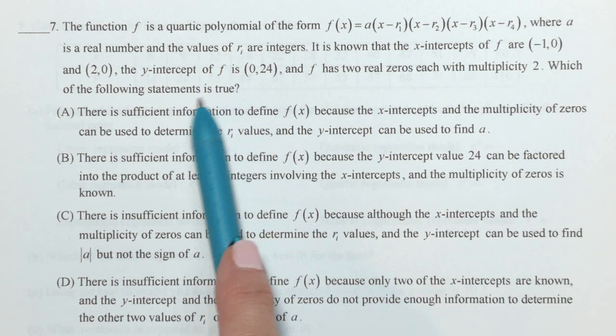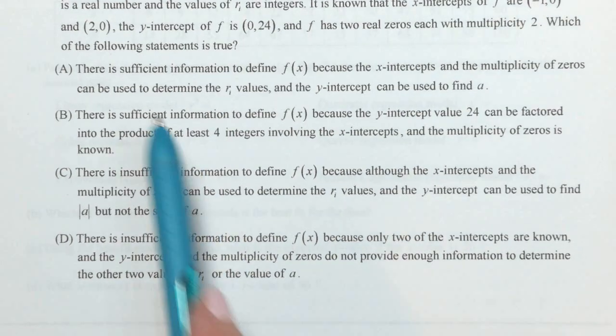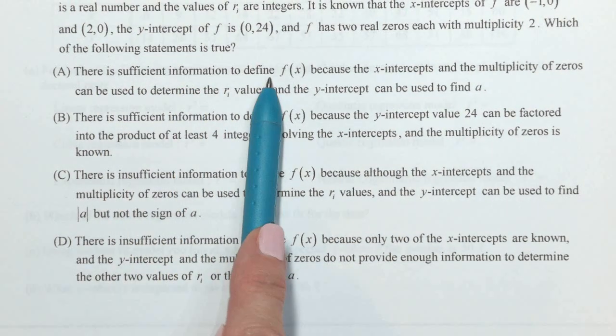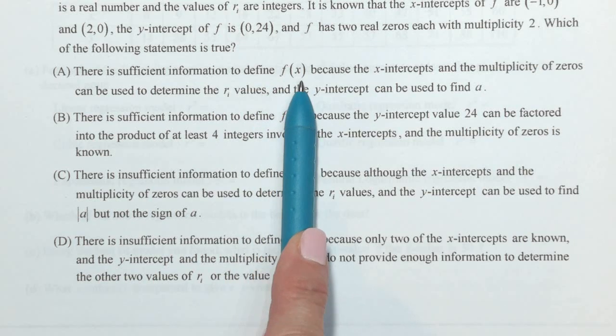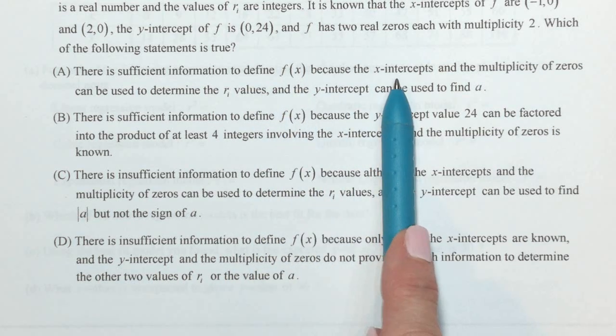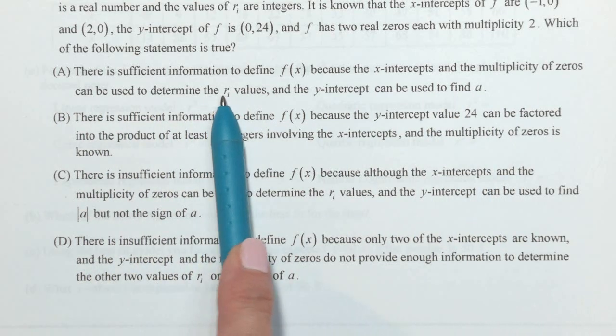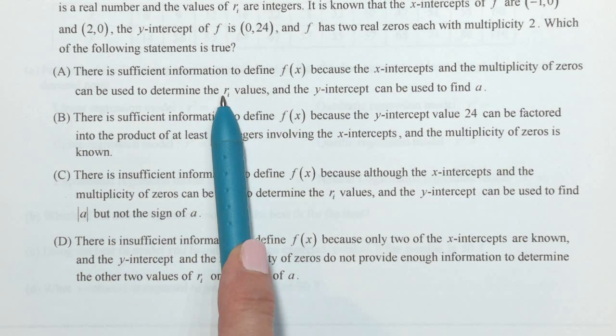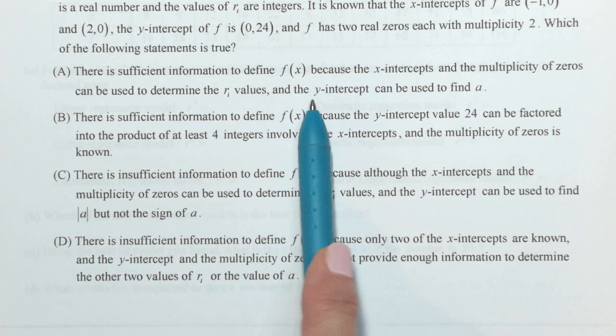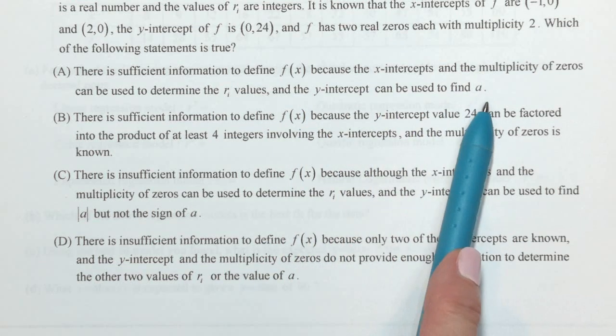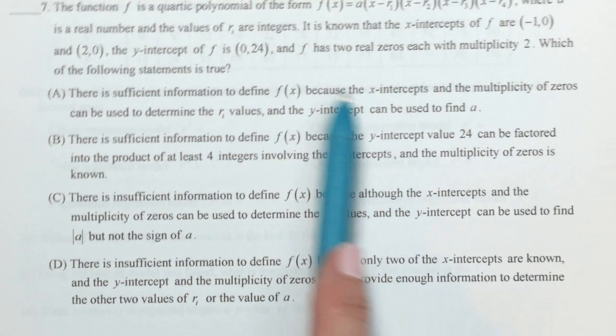So, I have all of the r values, and I have a point. Which of the following statements is true? There is sufficient information to define f because the x-intercepts and the multiplicity of zeros can be used to determine the r values. That is true. And the y-intercept can be used to find a.